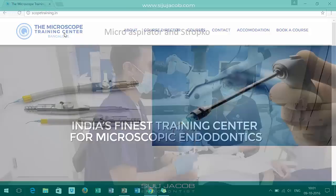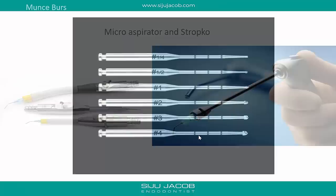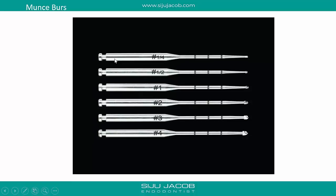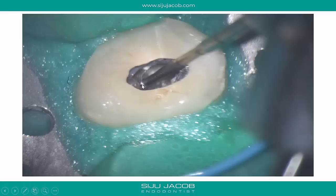The second tool, apart from the microscope, is the micro-aspirator and stropco. When handling calcified canals you are working in very deep areas and the three-way syringe cannot deliver air deep enough — that's where the micro-aspirator and stropco come into play. The third tool is MUNSBURS — micromotor burs with two distinguishing characteristics: a very long shank and very small sizes, so you can do precise truffing of small areas. Because of the long shank you get adequate clearance and can clearly see where the tip is working.